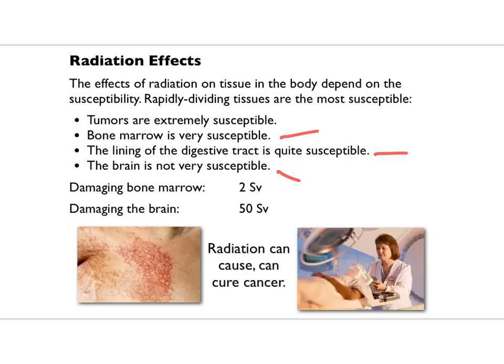Radiation can cure cancer — absolutely true — and that was discovered not long after radioactivity was discovered. The reason is that tumors are extremely susceptible to radiation. But also, radiation on healthy tissue can produce mutations that can cause cancer. So it's a double-edged sword.